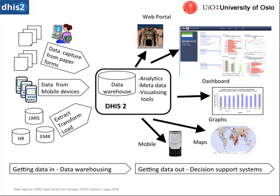I'm going to leave you with a graph that shows the outline of how DHIS2 works. On the left side, we see getting data in — the data warehousing — and on the right side, getting data out — the decision support systems. Getting data in includes entering data directly into DHIS2 online, uploading via spreadsheet, entering from mobile devices, or using individually tracked entities. The mobile device app has more frequent updates than the desktop or web version of DHIS2, and we'll talk about that in the web and apps units.